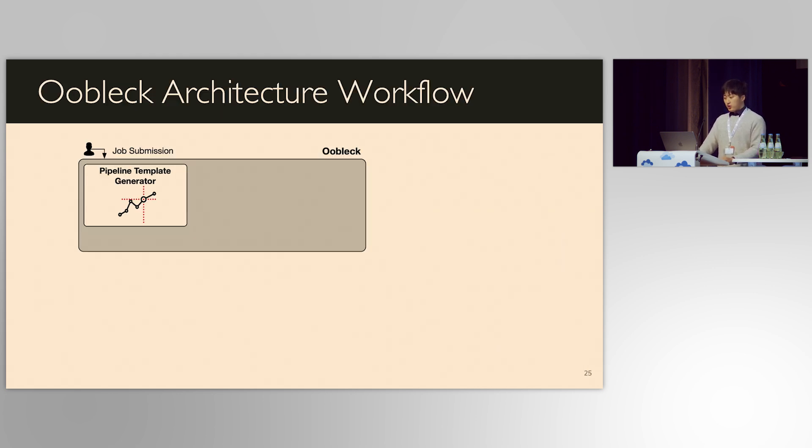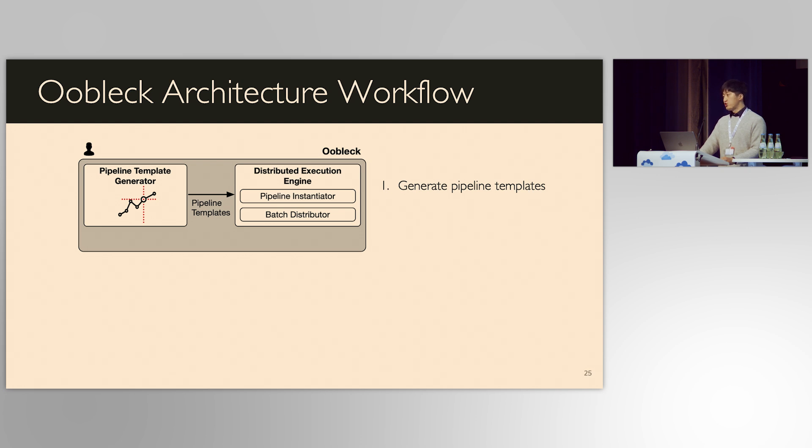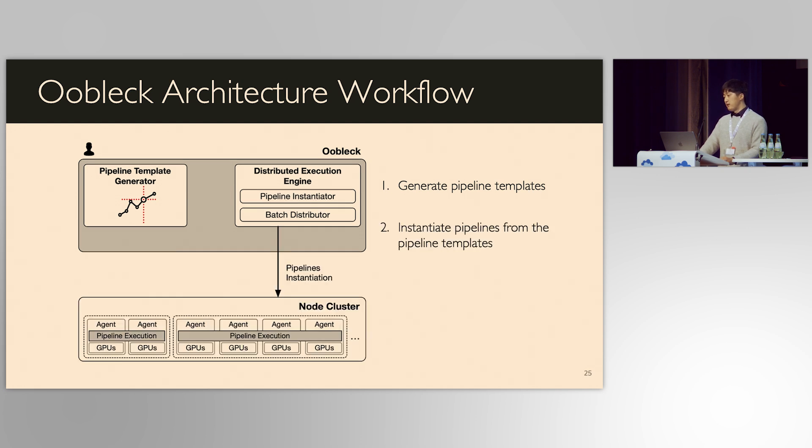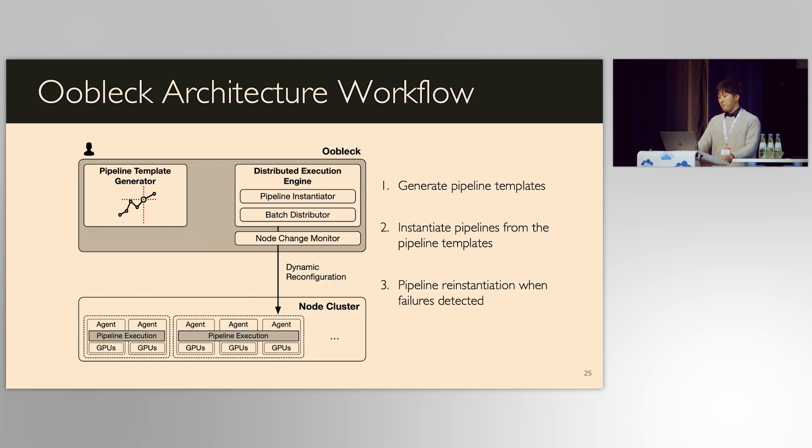In overall architecture, we first generate a set of pipeline templates. Given the generated pipeline templates, the distributed execution engine instantiates actual pipelines from the pipeline templates and deploy them to the node cluster. Note that once a set of pipeline templates is generated, the set is fixed and never changed before the entire training. When failures happen, the engine reinstantiates the affected pipeline without full restart. After pipeline reinstantiation, the cluster can continue training.